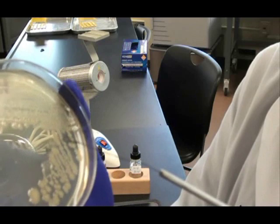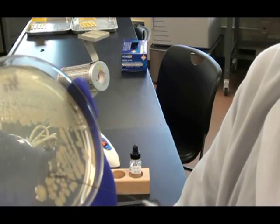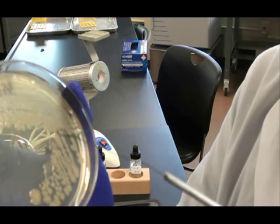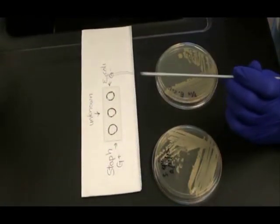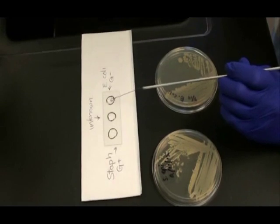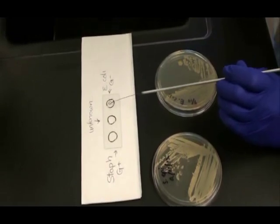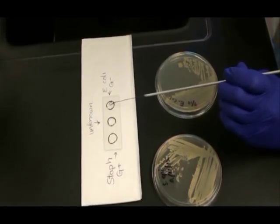So to obtain a sample, I just take my cooled loop and run it across a colony that's growing on the surface of the medium. Then I swirl that sample into the water droplet in the circle on the right side of my slide.